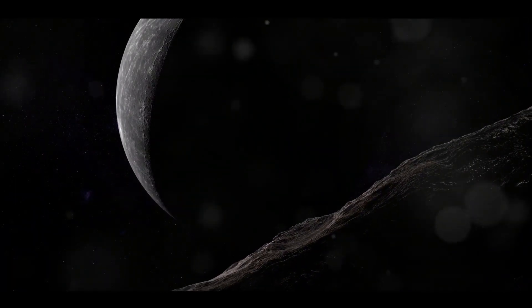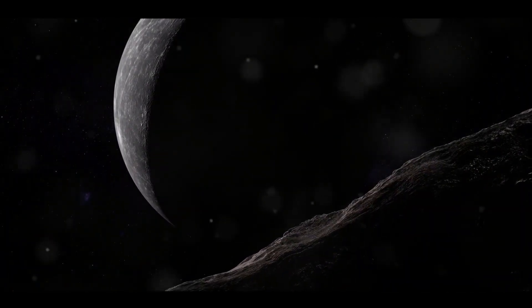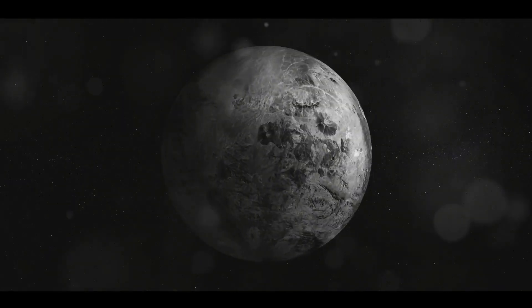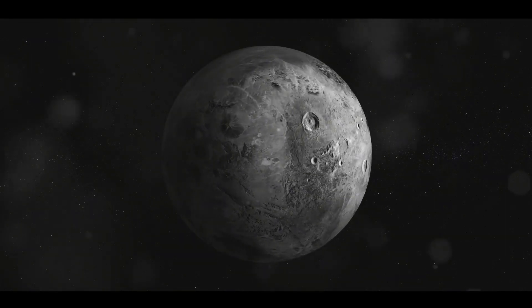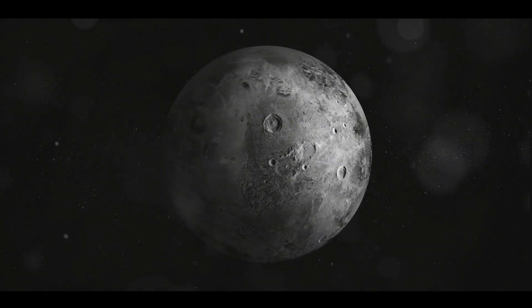Haumea's elongated shape, Makemake's remote location in the Kuiper belt, and Ceres's distinction of being both the smallest dwarf planet and the largest object in the asteroid belt, all contribute to our growing knowledge about the solar system.